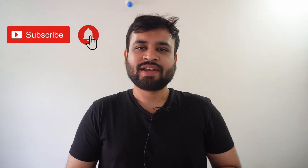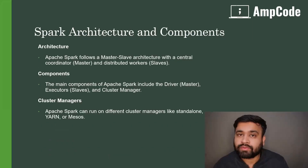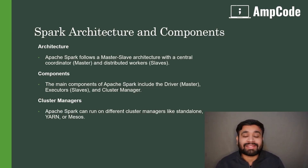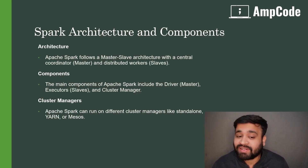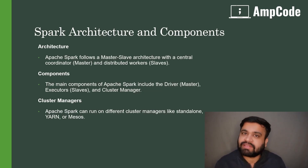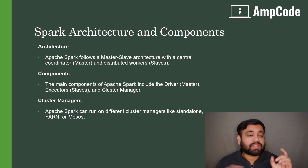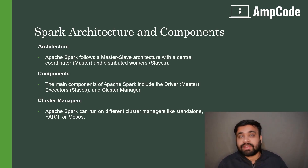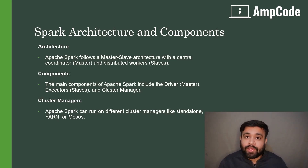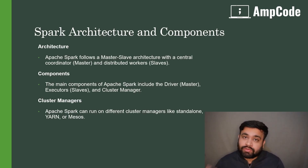We need to cover some basics to understand how Spark works under the hood. At its core, Apache Spark follows a master-slave architecture. The master coordinates all the processes and data processing on the platform, and the slaves are the worker nodes — just as we've seen in the Hadoop ecosystem — where worker nodes do all the groundwork: storing data, processing data, and communicating with the master.